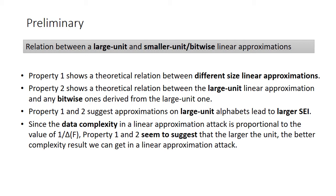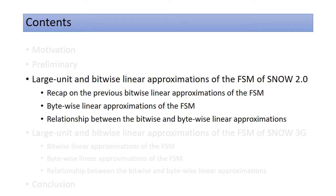Since the data complexity in a linear attack is proportional to the value of 1 over SEI of F, Properties 1 and 2 seem to suggest that the larger the large unit, the better complexity result we can get in a linear attack. Next, we will introduce the work we've done. The first is about the large unit and bitwise linear approximations of the FSM of SNOW 2. In this part, we will study the bytewise and bitwise linear approximations respectively.